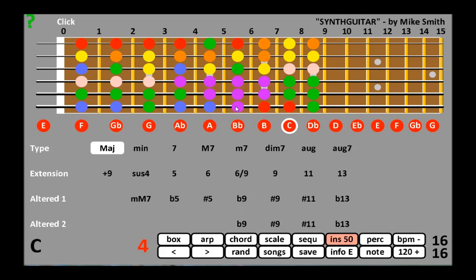Percussion instruments can be played on the fingerboard but are not recorded or played as chords or scales, though there are some percussion instruments that can be. The different types of percussion are colour coded, and the percussion sound will be shown on the top left instead of the instrument.